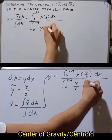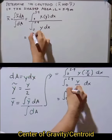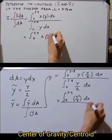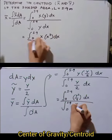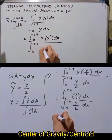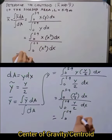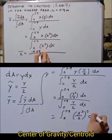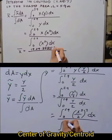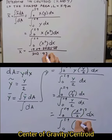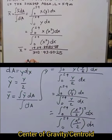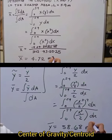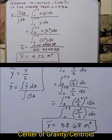We apply what we learned from integral calculus using the formulas derived from the given data to find the centroid x̄ and ȳ. You can calculate directly using advanced scientific calculators or use integral calculus. The result is x̄ = 4.72 meters and ȳ = 58.68 meters.